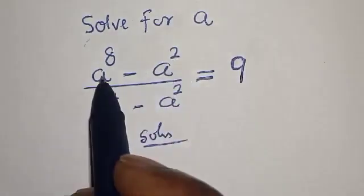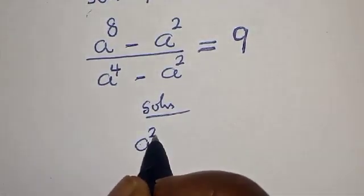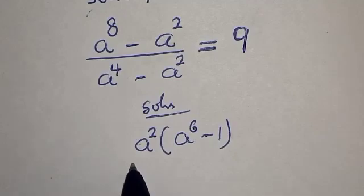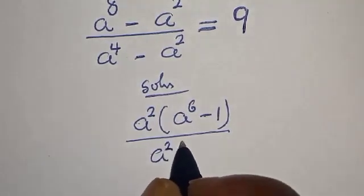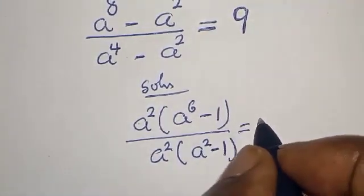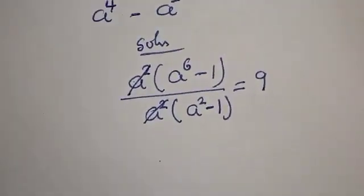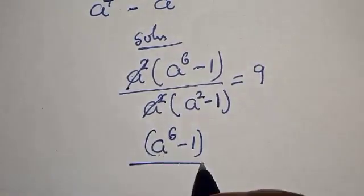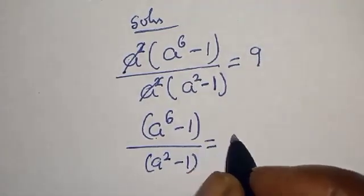We have a squared here, and here is a raised to power 4. Let's bring a squared out. The numerator becomes a squared times (a raised to power 6 minus 1), and the denominator becomes a squared times (a squared minus 1), equal to 9. The a squared cancels, leaving us with (a raised to power 6 minus 1) divided by (a squared minus 1) is equal to 9.